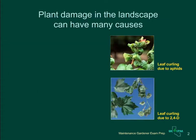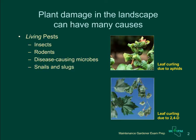When people see a plant that looks unhealthy, they often jump to the conclusion that it's been damaged by a pest. Pests are living organisms that damage plants and may include insects, rodents, fungi, bacteria, or snails and slugs.